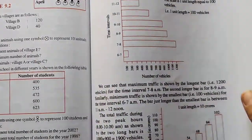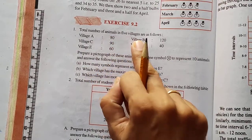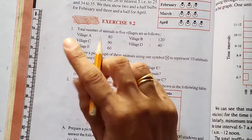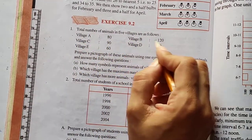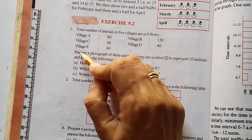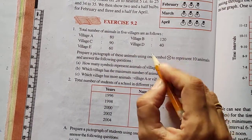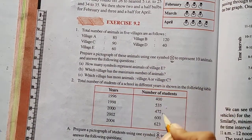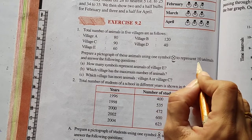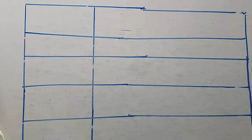Now we see exercise 9.2. The total number of animals in five villages are as follows: village A — 80, village B — 120, village C — 90, village D — 40, and village E — 60. Prepare a pictograph of these animals. The symbol given represents ten animals. So now we draw a pictograph and you have to draw a chart.